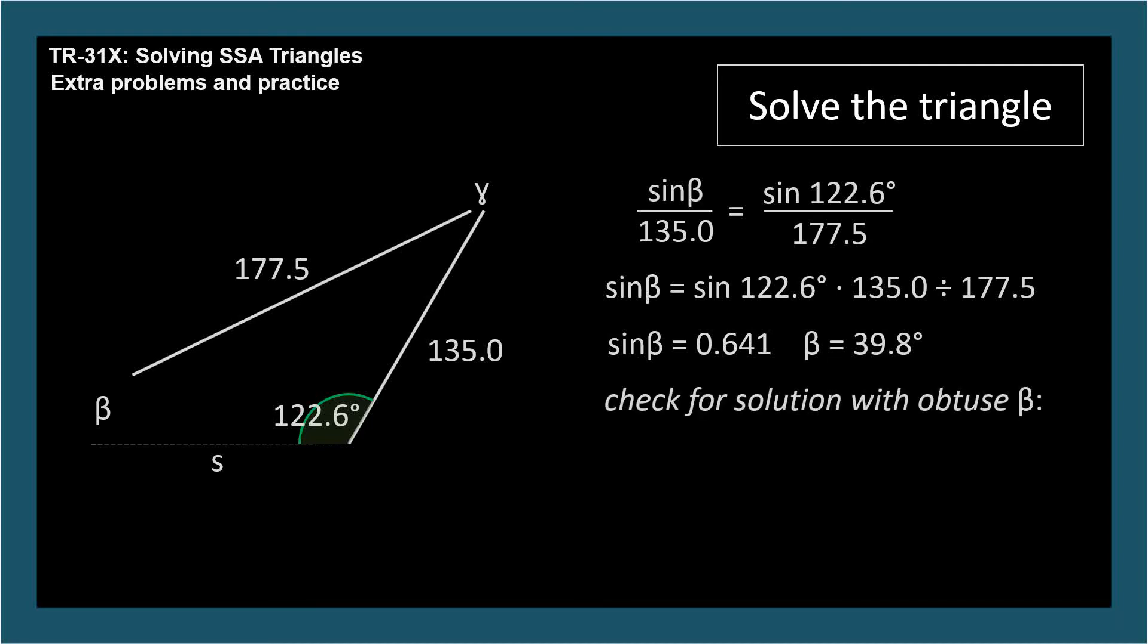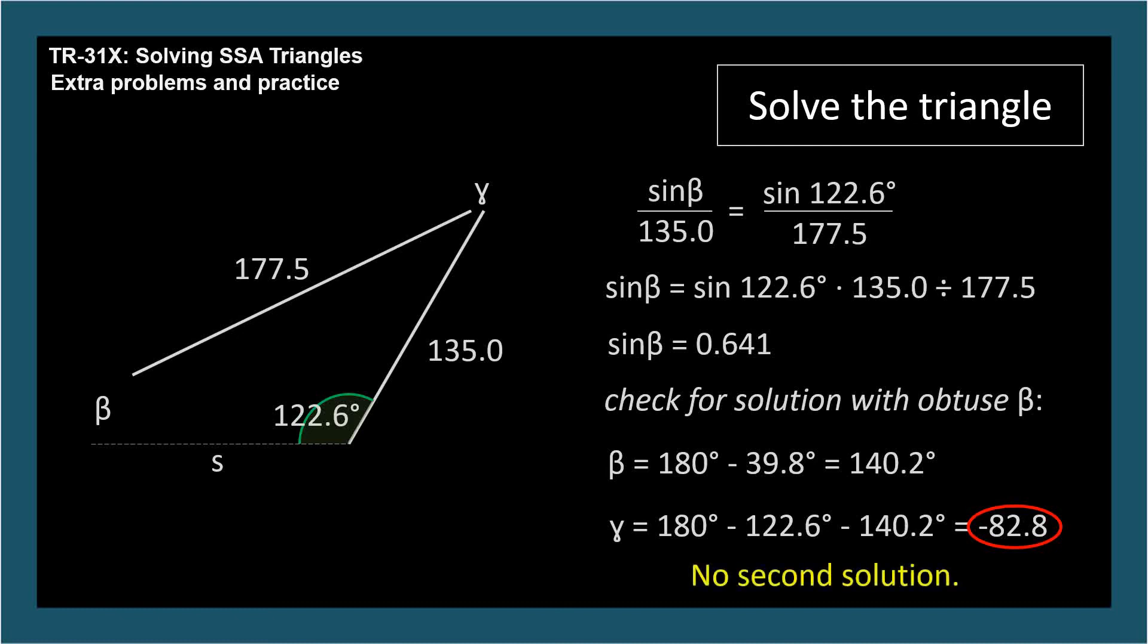Now let's see what happens when we try to find a second solution, which would involve an obtuse angle for beta. We know this won't work, so let's see what breaks so we'll recognize it when we see it again. The sine of beta is 0.641, and the acute angle with this sine is 39.8 degrees. The obtuse version will be over in quadrant two, 180 degrees minus 39.8 degrees, which is 140.2 degrees. Now we find angle gamma by subtracting our two known angles from 180 degrees: 180 minus 122.6 degrees minus 140.2 degrees equals negative 82.8 degrees. Calculating a negative angle means you're going down a path with no solution, so we can stop here because there's no second solution.